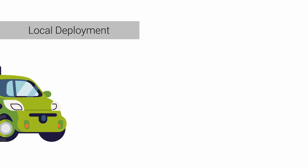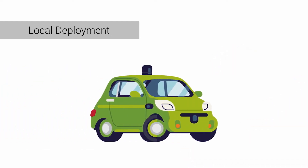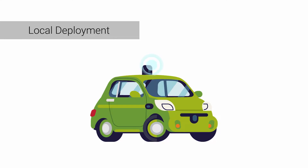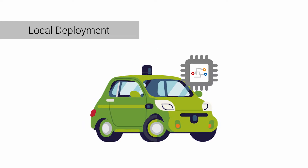For example, an autonomous vehicle has a lot of sensors always collecting data, which is stored in the car itself. The machine learning model that decides what the car does needs to be in the car as well, so it can quickly analyze the data and make the appropriate decisions.